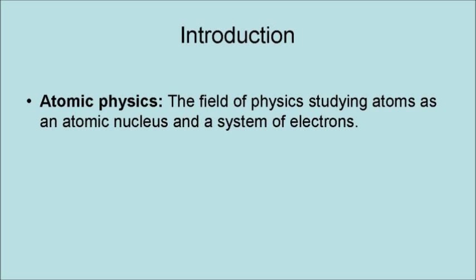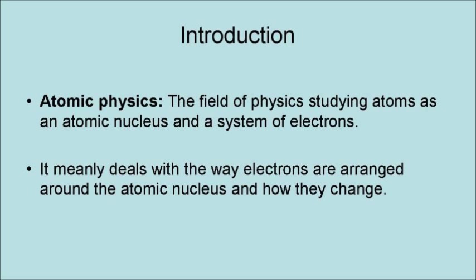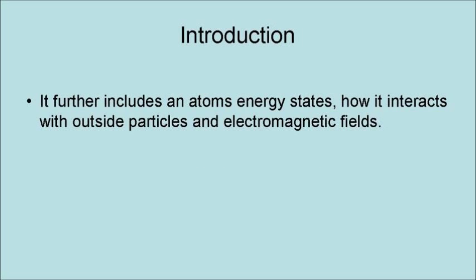Atomic physics is the field of physics studying atoms as an atomic nucleus and a system of electrons. It mainly deals with the way electrons are arranged around the atomic nucleus and how they change. It further includes an atom's energy state and how it interacts with outside particles and electromagnetic fields.